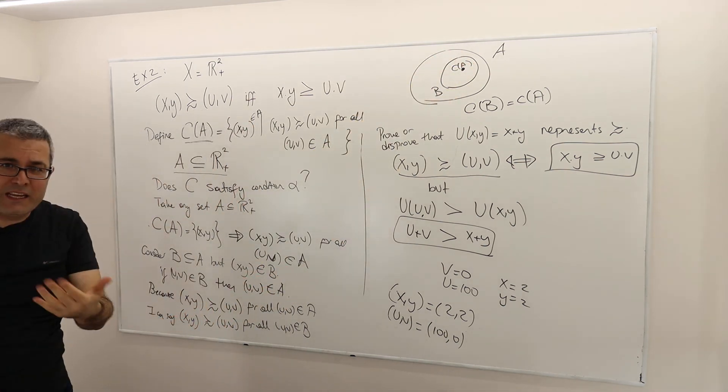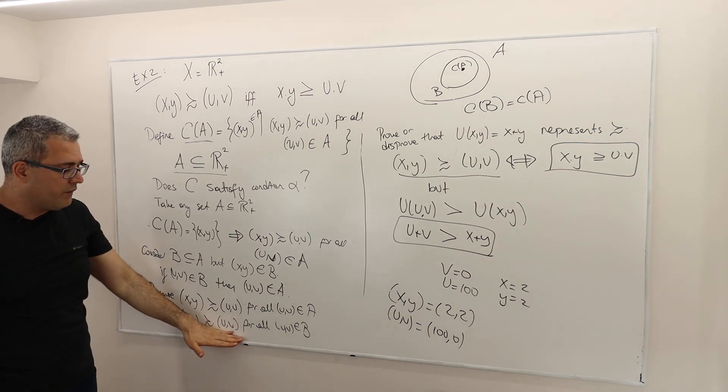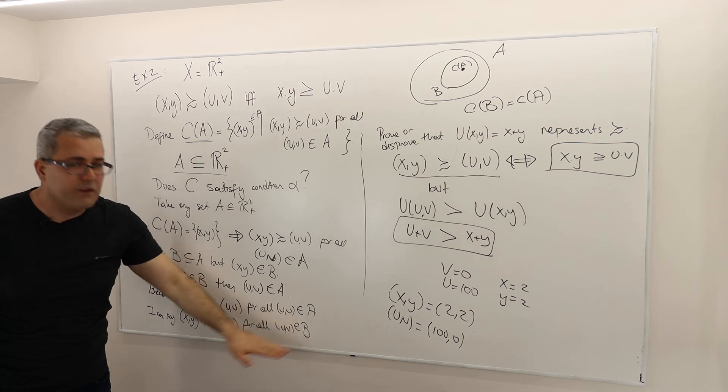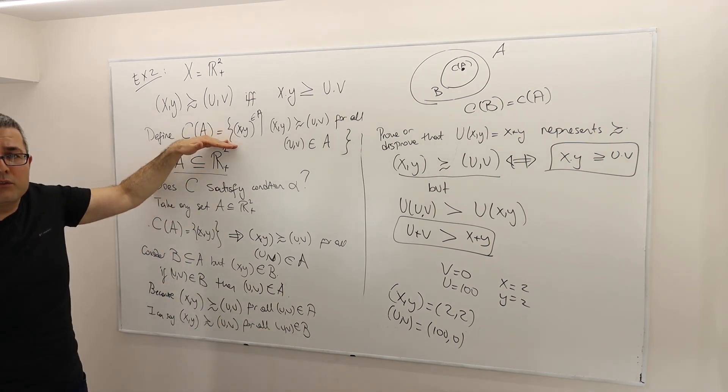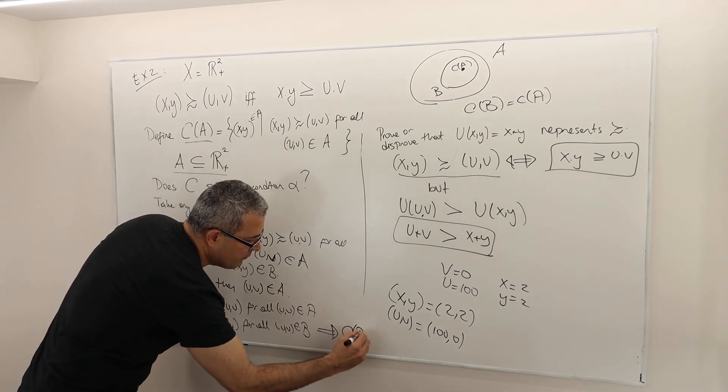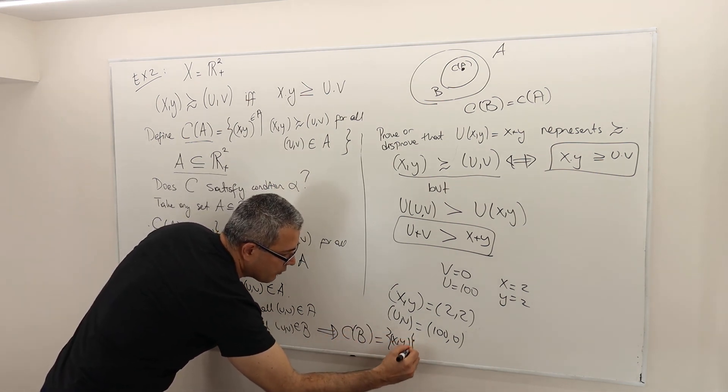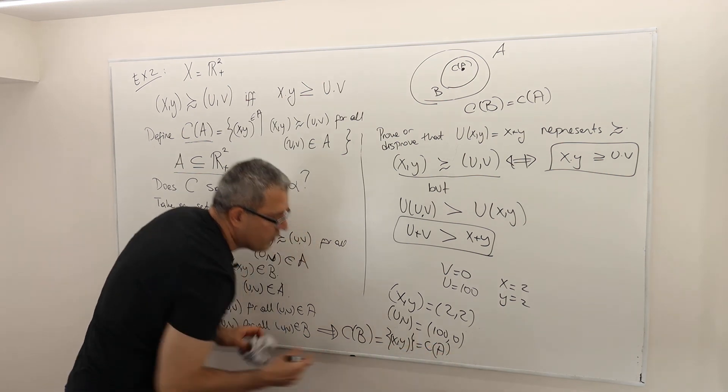So therefore, beating, I mean, at least as good as sense. So XY is at least as good as UV for everything, for every UV in B. According to the definition, that means my choice in B is exactly equal to the XY vector, which is equal to choice in A.